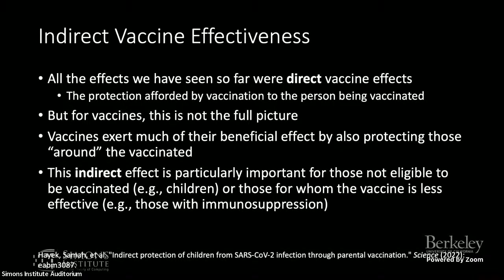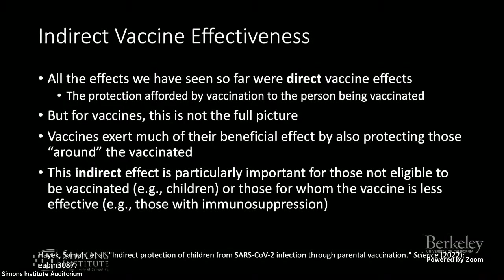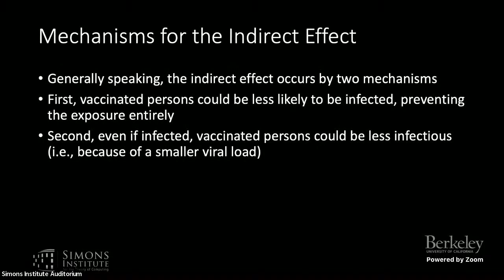For each age group, plotting incidence of new infections, the dashed vertical line marks when that age group became eligible for the booster. About a week after eligibility, the line breaks and incidence begins to fall. The boosters changed the course of the third pandemic wave in Israel, probably preventing widespread death and potentially imminent failure of the healthcare system. That was all about direct vaccine effects — now let's discuss indirect vaccine effects, the protection afforded to others around vaccinated people.